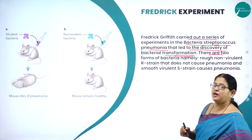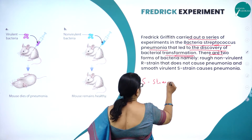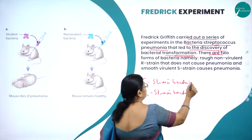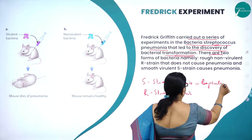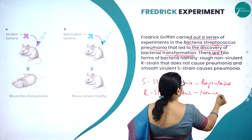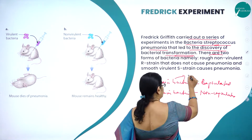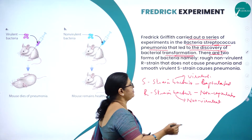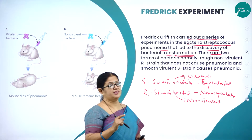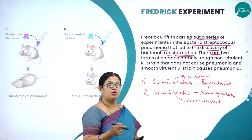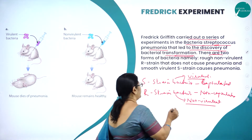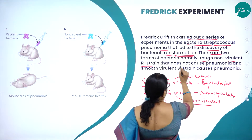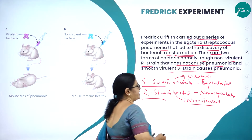There are two forms of bacteria: one is called S-strain bacteria and the other is called R-strain bacteria. S-strain bacteria is usually capsulated and virulent, while R-strain is non-capsulated and non-virulent. Virulent means it causes disease in mice; non-virulent bacteria does not cause disease. So he discovered two forms: rough non-virulent R-strain that does not cause pneumonia, and smooth virulent S-strain that causes pneumonia.